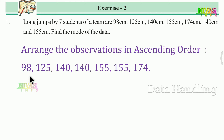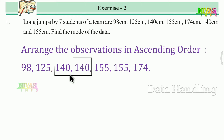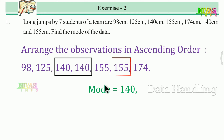Ascending order: 98, 125, 140, 140, 155, 155, 174. Checking for repeated values: 140 occurs two times and 155 occurs two times. Both values are repeated equally, so the data has two modes: 140 and 155. This is bi-modal data.